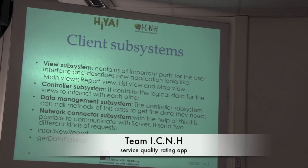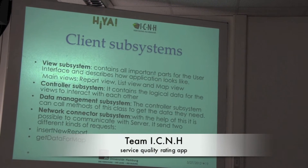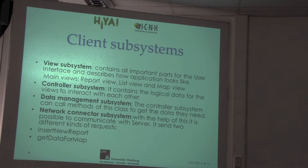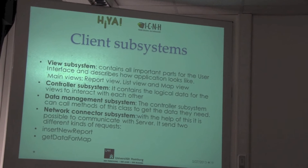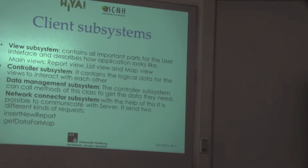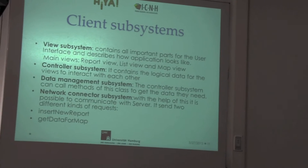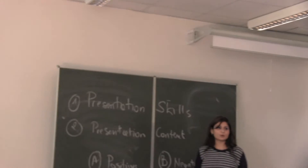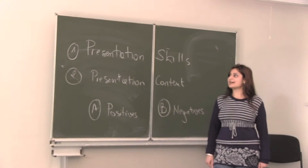The client system is divided into four subsystems. The first subsystem is the view subsystem. It contains all the important parts of the user interface and describes how the application looks.